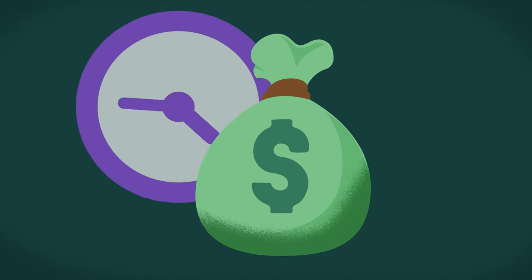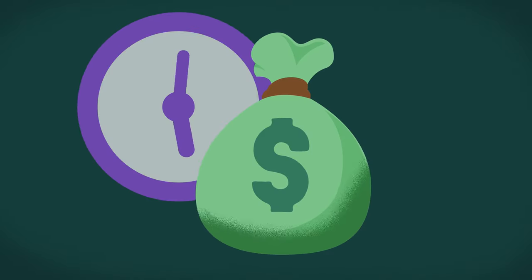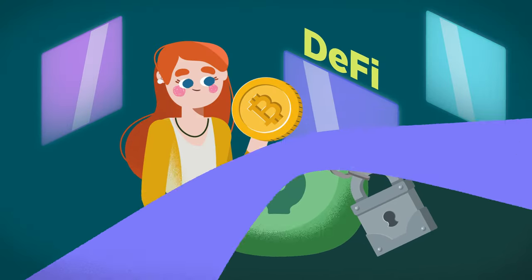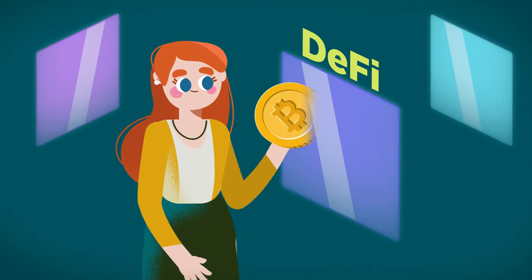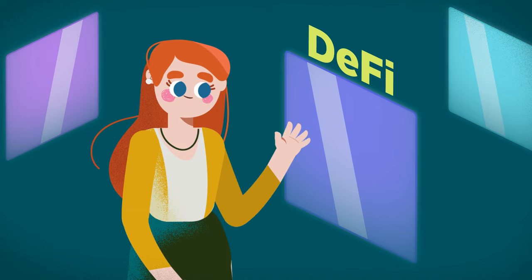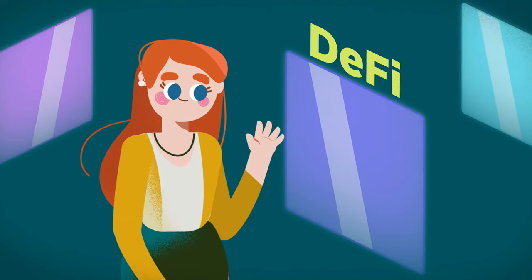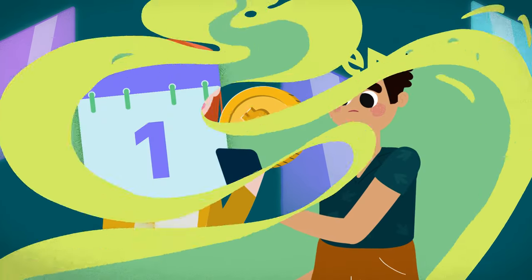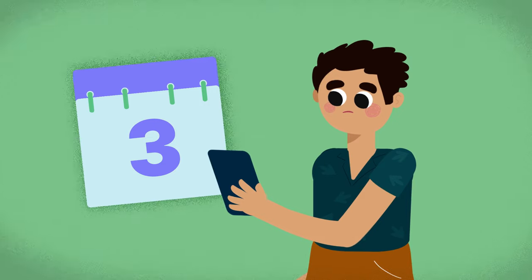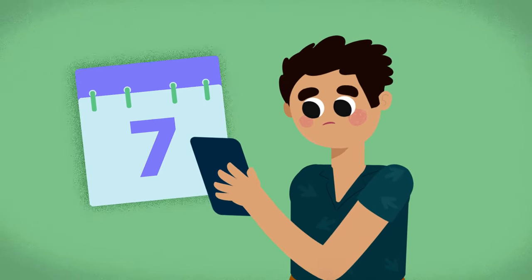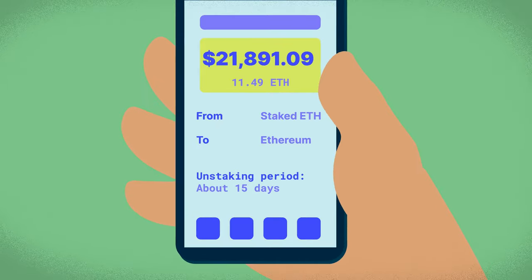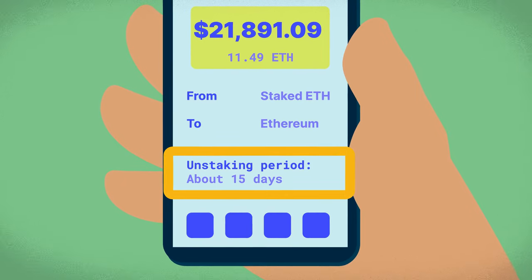Yield farming also differs from staking in terms of lock-up periods. In yield farming, when you deposit your tokens to DeFi platforms, you can usually withdraw them instantly. Proof-of-stake staking, on the other hand, typically has an unstaking period — usually a few days or weeks — though there are some exceptions to this.